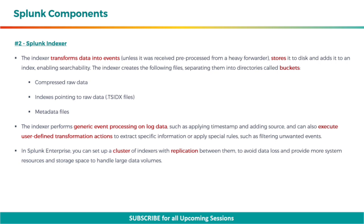The second component is the Splunk indexer. The indexer transforms data into events, unless it was received pre-processed from a heavy forwarder, stores it to disk and adds it to an index, enabling searchability. The indexer creates files separated into directories called buckets, that includes compressed raw data, indexes pointing to raw data, and metadata files. The indexer performs generic event processing on log data, such as applying timestamps and adding source, and can also execute user-defined transformation actions to extract specific information or apply special rules, such as filtering unwanted events. In Splunk Enterprise, you can set up a cluster of indexers with replication between them, to avoid data loss and provide more system resources and storage space to handle large data volumes.